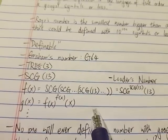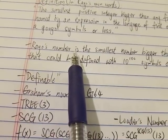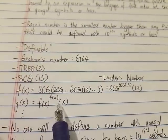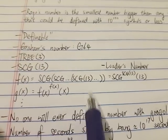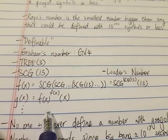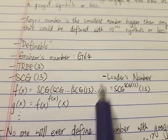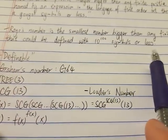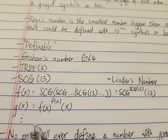And the thing for Rayo's number is that as long as your function that you created could be defined with less than a googol symbols, then Rayo's number has to be bigger than your function.